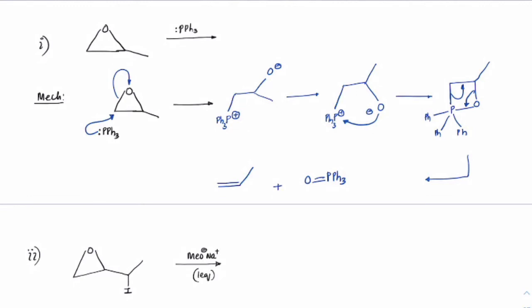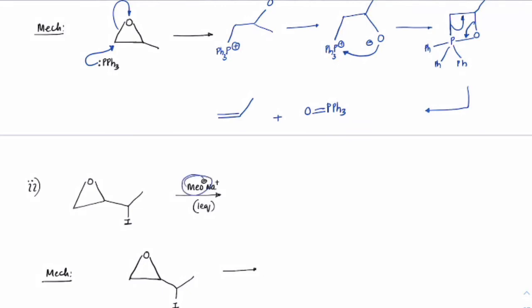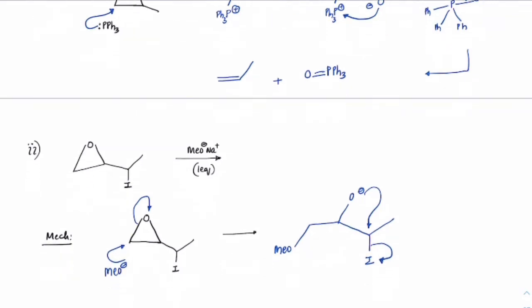Intramolecular reaction: if you have MeO⁻ (a strong nucleophile), it attacks the less substituted side, opening the ring and generating an O⁻, which then attacks the iodine in an internal SN2 reaction — because iodine is a better leaving group there. MeO⁻ first attacks this carbon, the C–O bond undergoes cleavage giving MeO attached with O⁻ connected to the carbon bearing iodine; this O⁻ attacks the iodine. The final product has MeO and an O-containing ring formed.